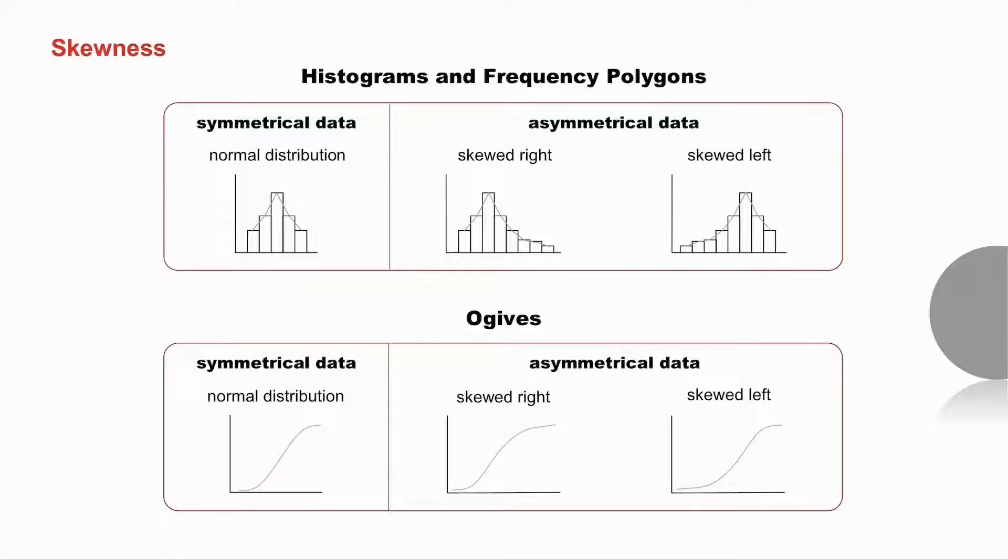If we look at skewness in all of these, with the histogram and the frequency polygon, it's completely symmetrical if there's the same on either side of your modal class. If it's more spread out to the right of the modal class, it's skewed to the right. If it's more spread out to the left of the modal class, it's skewed to the left.